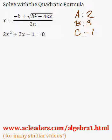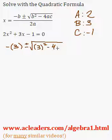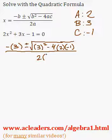Alright, so now we can plug all these guys into the formula. Negative B plus or minus root of B squared minus 4AC all over 2A.